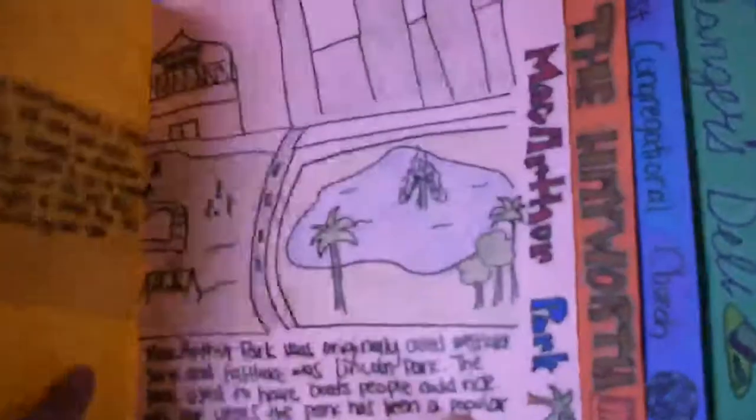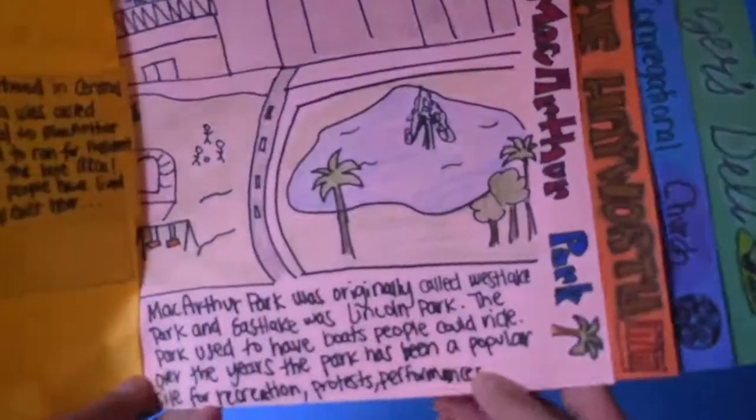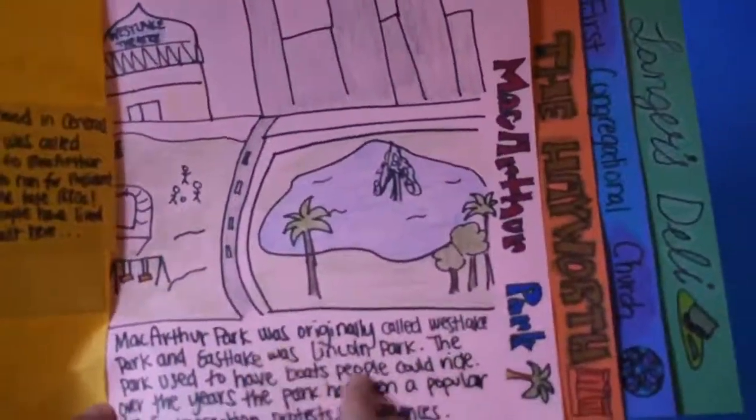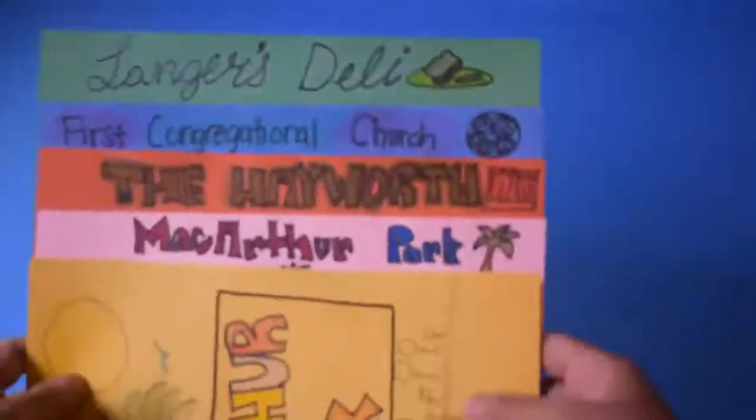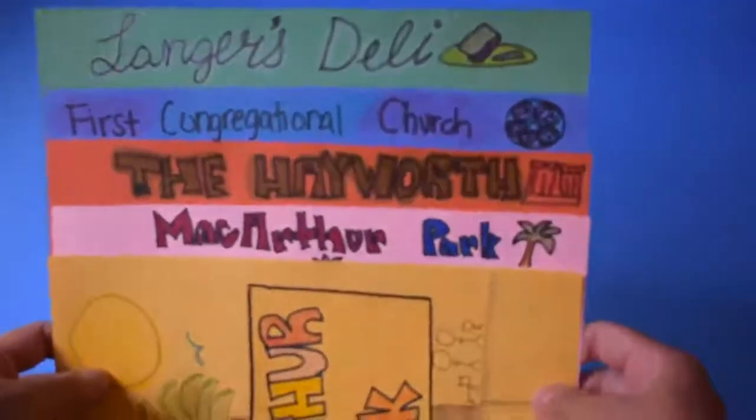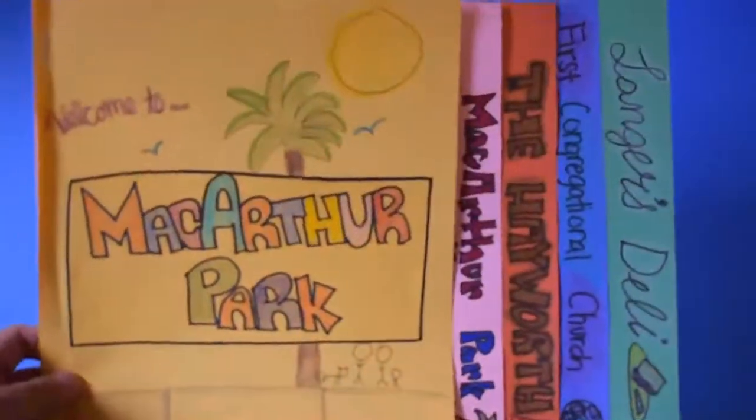Each page will showcase a drawing of a place that you like to visit and a short description describing that place. I'm featuring MacArthur Park, a neighborhood found in central Los Angeles. What will your book look like?